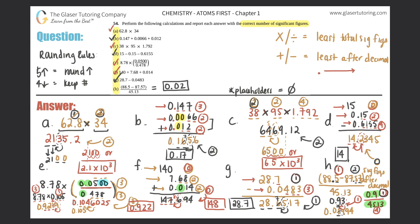That's a lot of work, but I hope you understand the sig fig rules for addition, subtraction, multiplication, and division. If you need more practice, check out number 53 — it's the same type of problem. If you do both 53 and 54 and understand what's going on, you'll ace this part of the test. Thanks for tuning in — click the subscribe button and I'll see you in the next video!